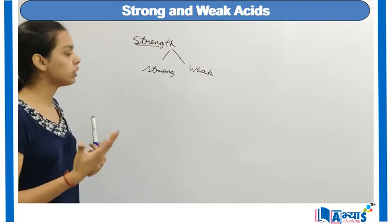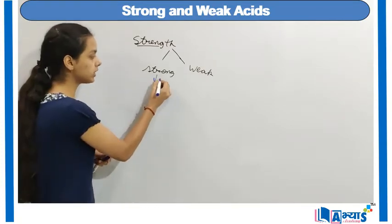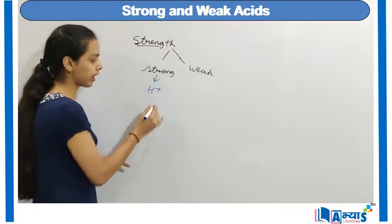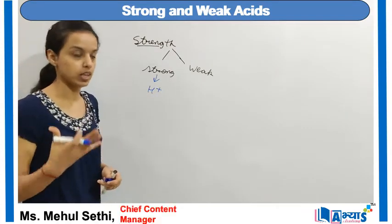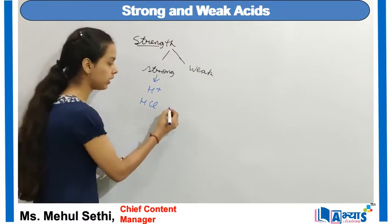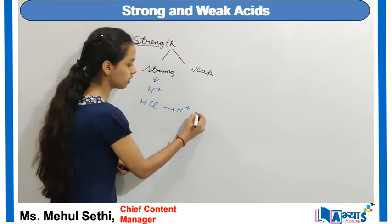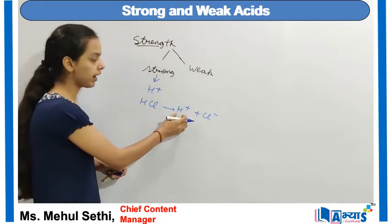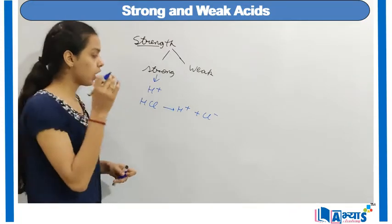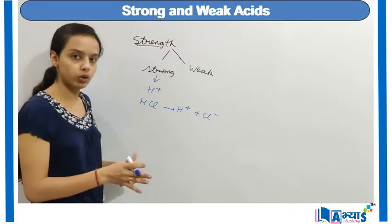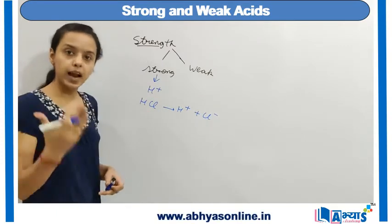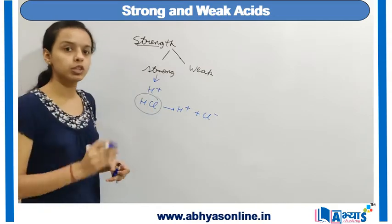When we talk about strong acids, all those acids which completely dissociate to form hydrogen ions are known as strong acids. For example, if we have HCl, when this HCl dissociates it will form H⁺ and Cl⁻. When there is complete dissociation of the hydrogen ion, that means this acid is a strong acid.